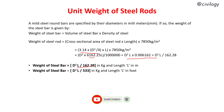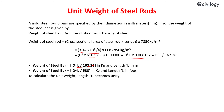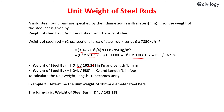If L is in feet, the formula becomes D²L / 533, also in kg. These are the two formulas to remember. For unit weight, L becomes 1 meter. Example: determine the unit weight of a 10 mm diameter steel bar. Weight = D²L / 162.28 = (10 × 10 × 1) / 162.28 = 0.616 kg per meter.